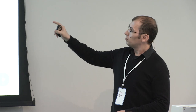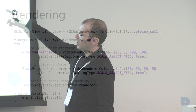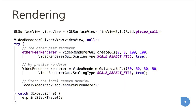In the sample code, we use the GLSurfaceView. We get the SurfaceView from the layout, create the other peer renderer to cover the full GLSurfaceView, and create our preview renderer covering just one square in the view. Adding the renderer to the local video track means we start seeing our preview.